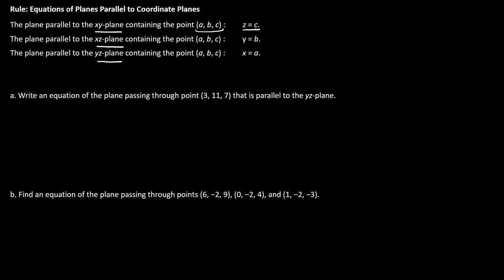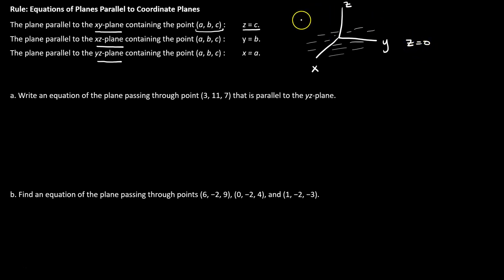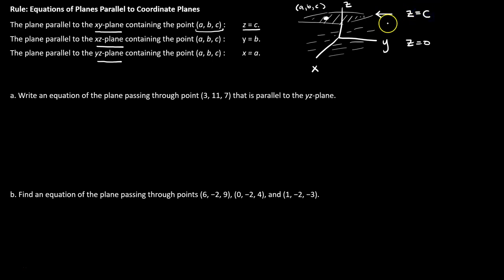Think about our 3D coordinate system with x, y, and z. The xy plane sits at the bottom of our coordinate system at z equals 0. If I have a plane parallel to it — maybe up here — and I know a point in that plane has coordinates (a, b, c), then that plane must have the equation z equals c: the z-value of the known point.